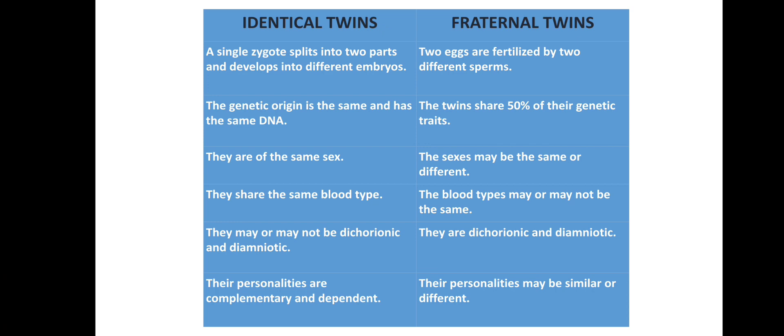Identical twins are always the same sex — they are both boys or both girls, because they come from a single zygote. But in the case of fraternal twins, the sexes can be different — they can be one boy and one girl, or two boys, or two girls.